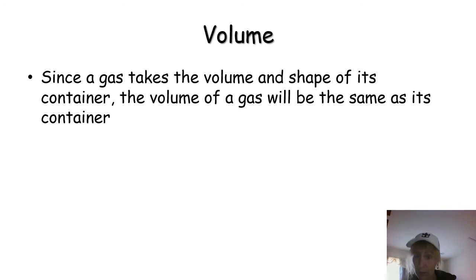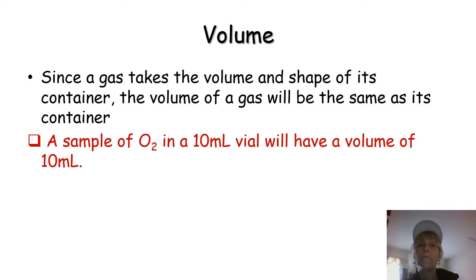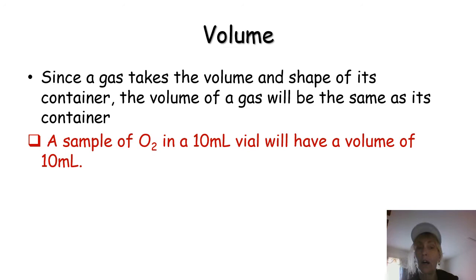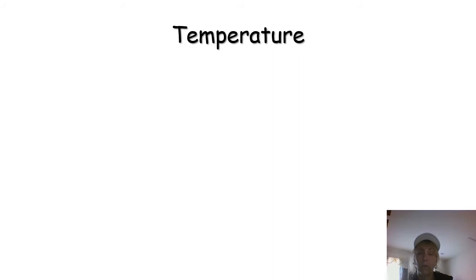The volume of a gas is going to be the same as whatever container you put it in. For instance, let's imagine we have a sample of oxygen gas, O2. Remember, oxygen is a diatomic molecule — O2 has a complete octet. So a sample of oxygen in a 10 milliliter vial — remember it fills the whole container — the volume of that oxygen is going to be the same as the container: 10 milliliters.